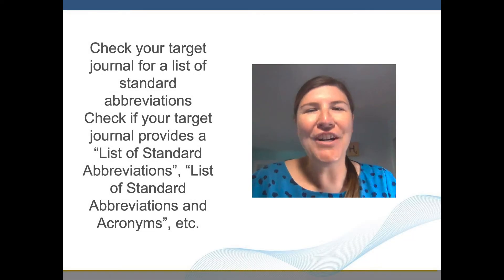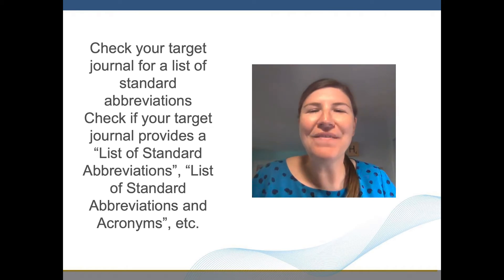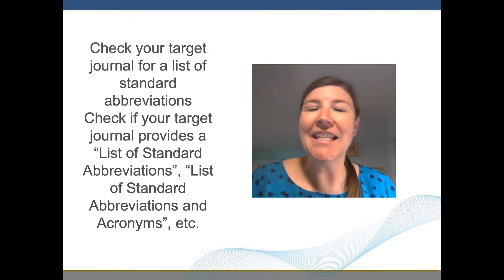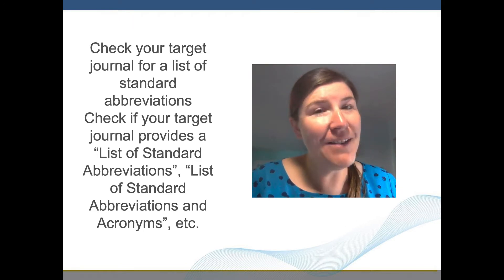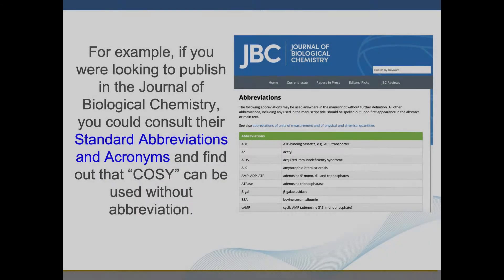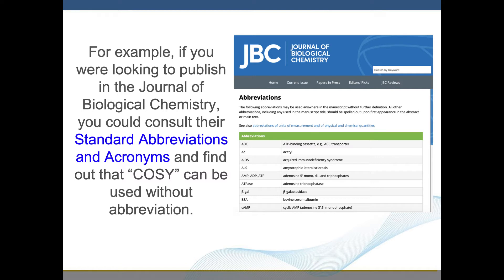Check your target journal for a list of standard abbreviations and acronyms. For example, if you were looking to publish in the Journal of Biological Chemistry, you could consult their standard abbreviations and acronyms and find out that COSY can be used without definition.